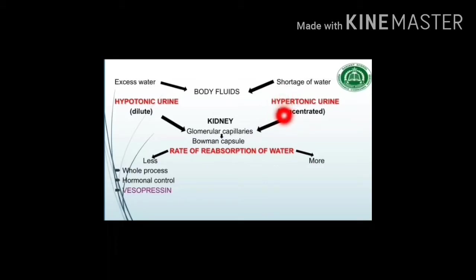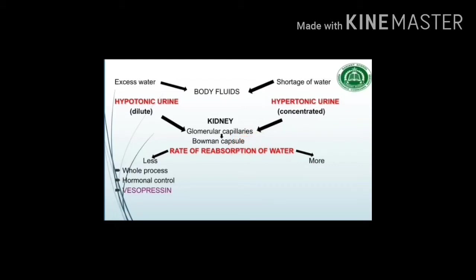On the other hand, in case of a shortage of water, the kidney produces hypertonic urine — that is, concentrated urine. In this case, it filters less water from the glomerular capillaries into the Bowman's capsule. The whole process is under hormonal control; the basic hormone is vasopressin.